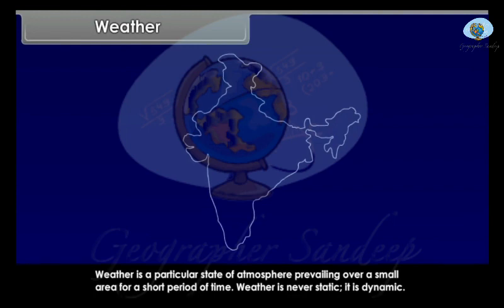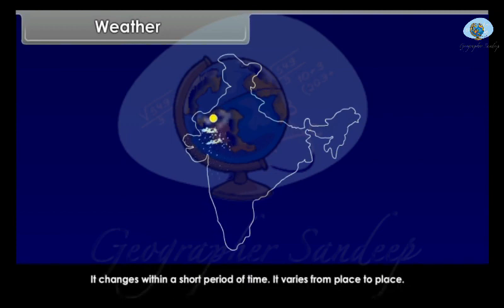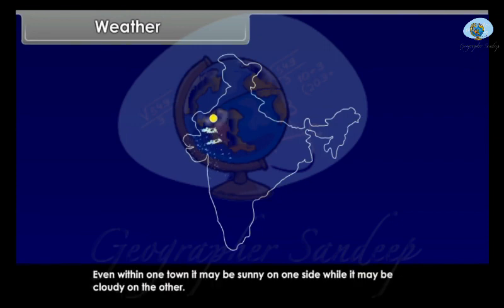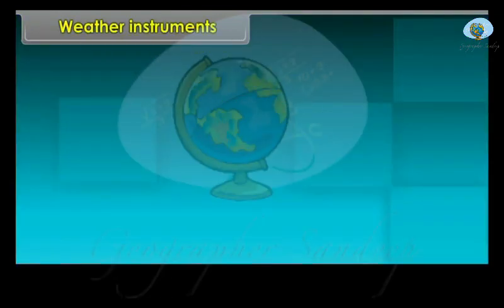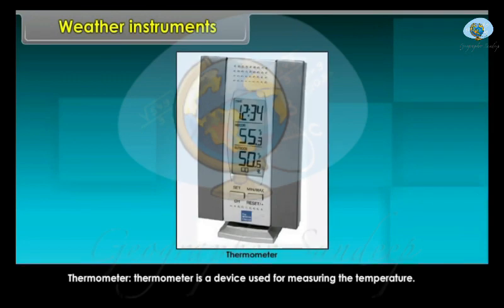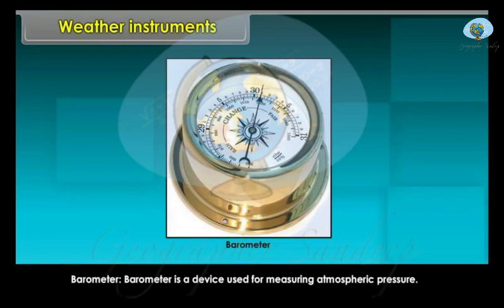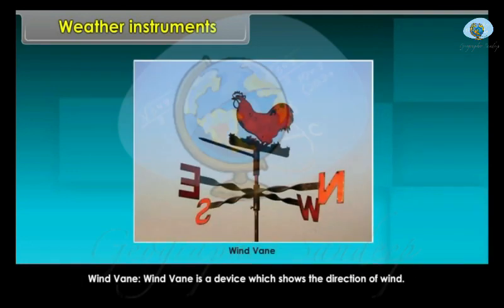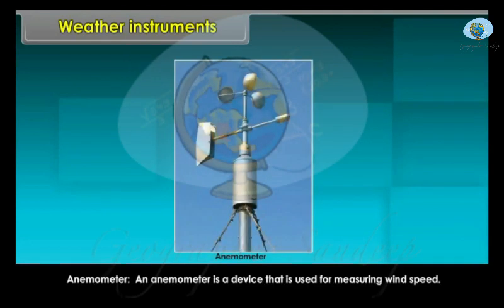Weather is a particular state of atmosphere prevailing over a small area for a short period of time. Weather is never static — it is dynamic. It changes within a short period of time and varies from place to place. Even within one town, it may be sunny on one side while it may be cloudy on the other. Various devices used for recording aspects of the weather include: the thermometer (for measuring temperature), the barometer (for measuring atmospheric pressure), the wind vane (for showing direction of wind), and the anemometer (for measuring wind speed).